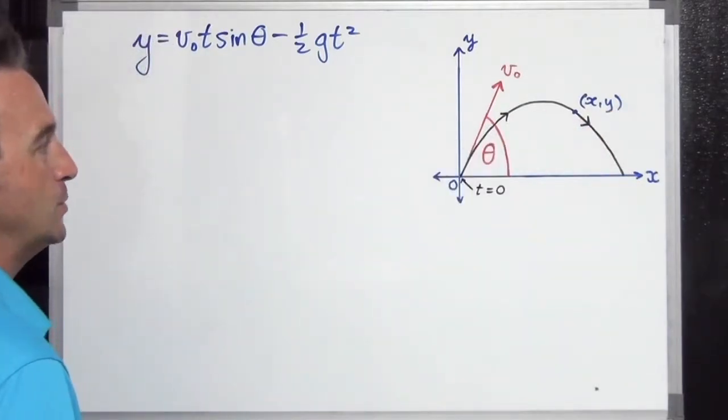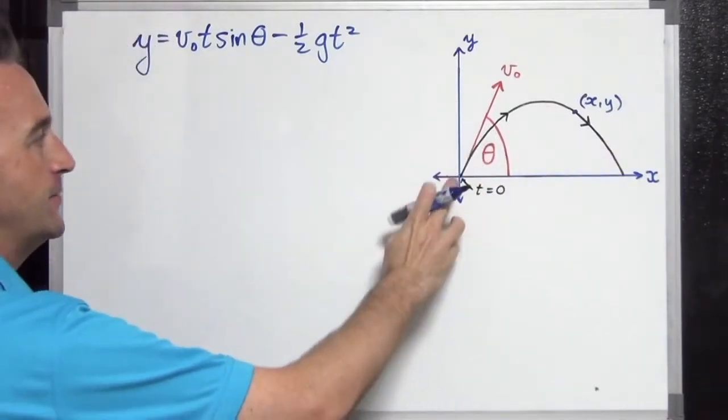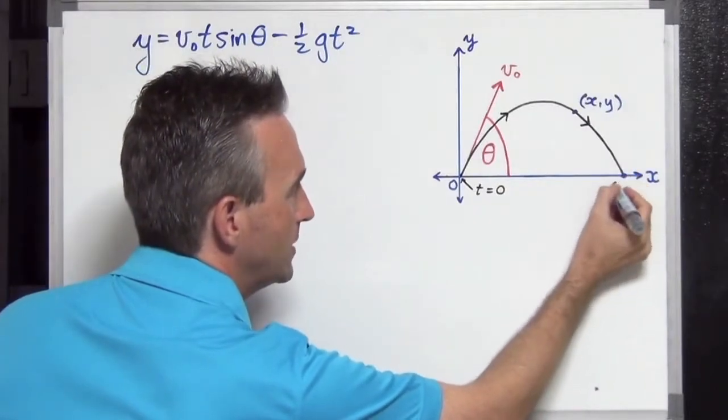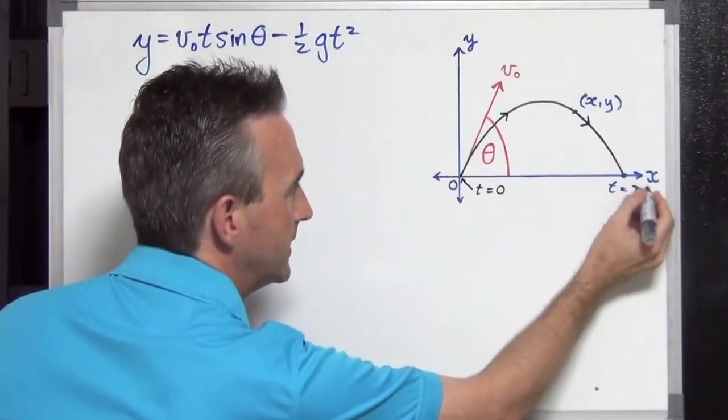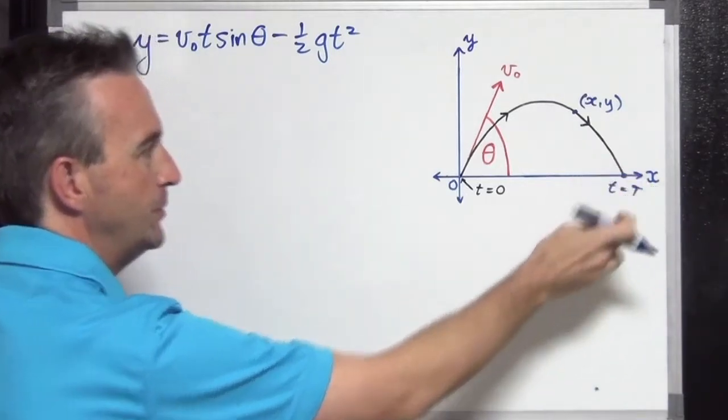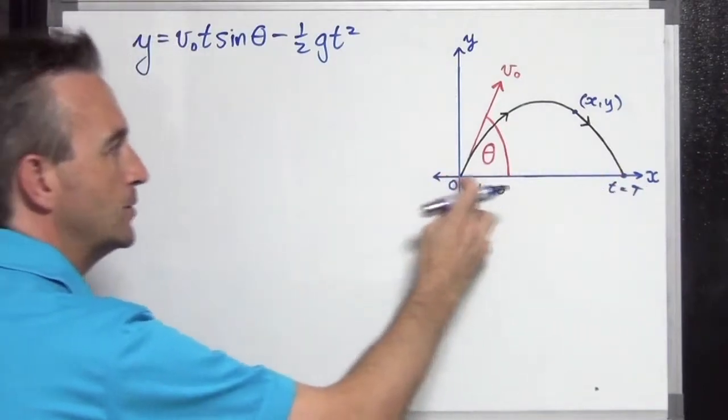So how are we going to do this? Well, we are interested in what time is it when it reaches the ground again. We're assuming that it's fired from ground level, and it's going to return to ground level. Well, let's call this time t equals, we're going to call it capital T. And so when it's at ground level over here, what can we assume?